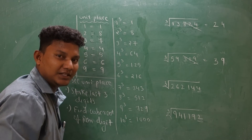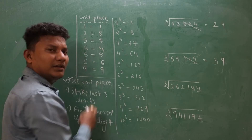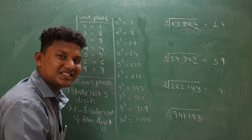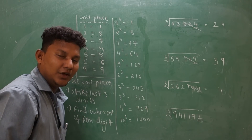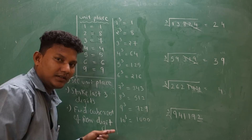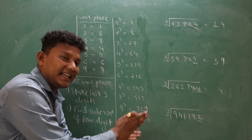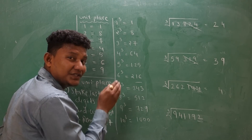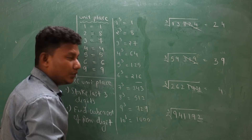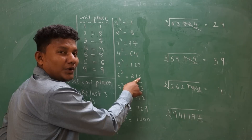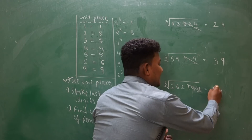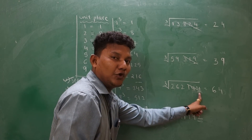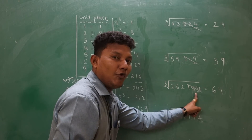Focus on the third example. See the unit place — it is 4. For 4, the answer is 4 only. Write it down. Step number 2: strike the last 3 digits. Step number 3: find the cube root of the remaining digit, either 262 or less than that. 262 lies between 216 and 343. The cube root less than 262 is 216, and the cube root of 216 is 6. Write down 6. When you multiply 64 × 64 × 64 you get 262144, so the cube root of 262144 is 64.